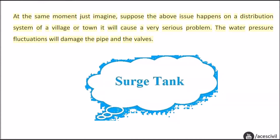At the same moment, just imagine if the above issue happens on a distribution system of a village or town — it will cause a very serious problem. The water pressure fluctuations will damage the pipe and the valves.